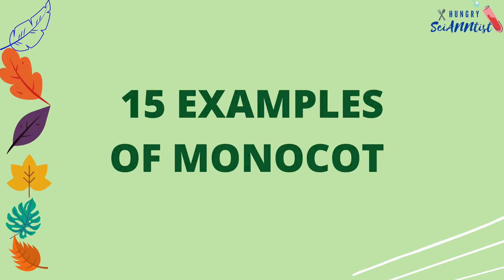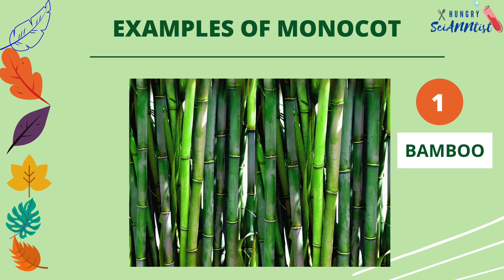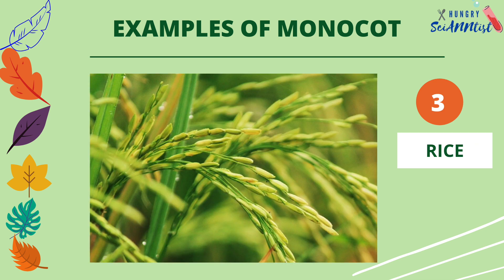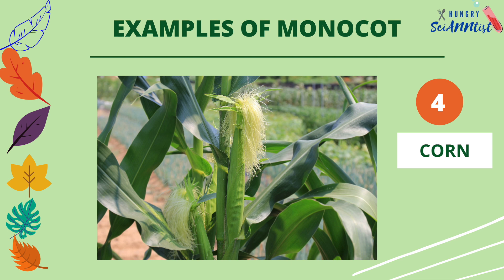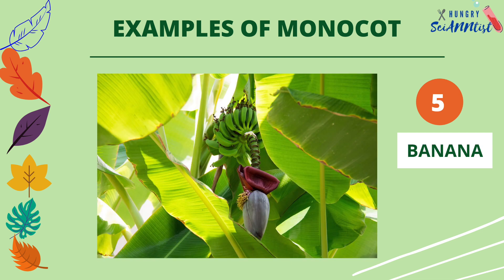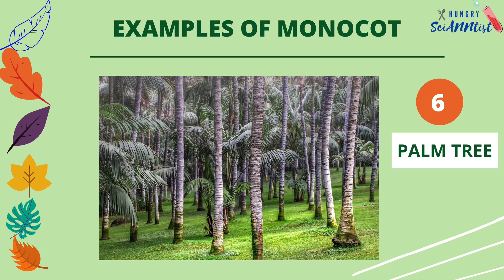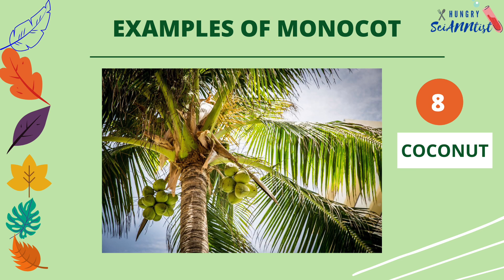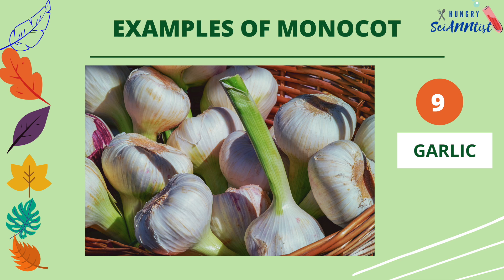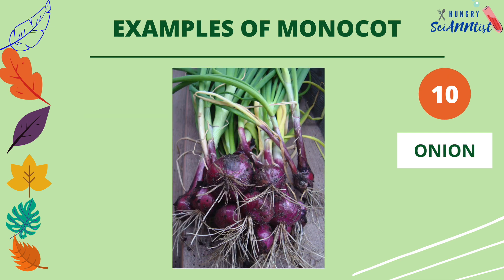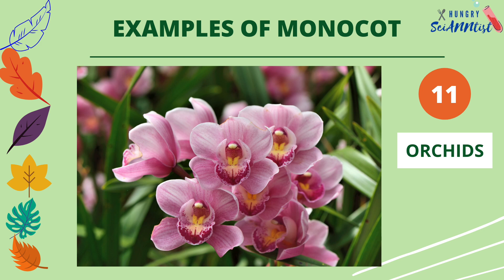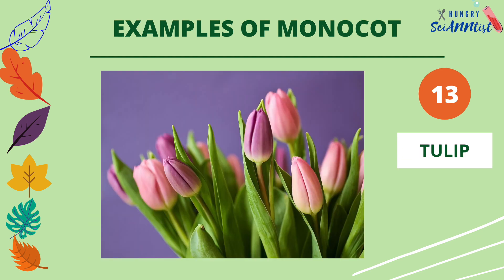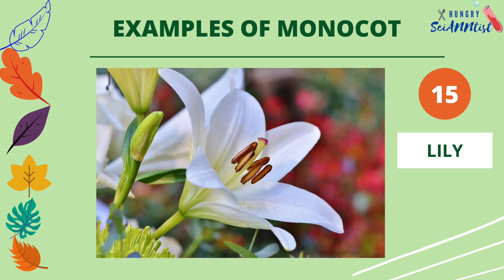Examples of monocot plants: bamboo, barley, rice plant, corn, banana, palm tree, pineapple, coconut, garlic, onion, orchids, sugarcane, tulip, trillium, lily.